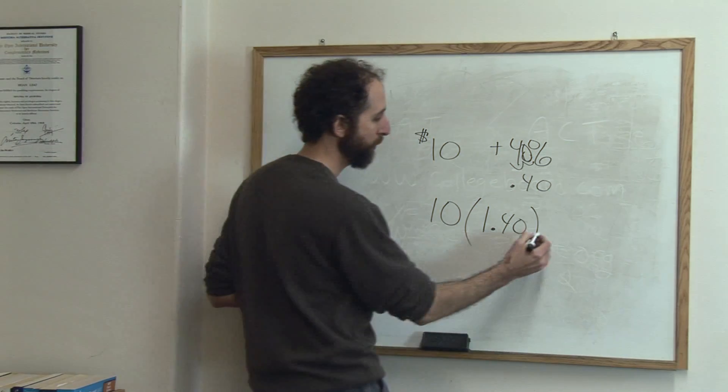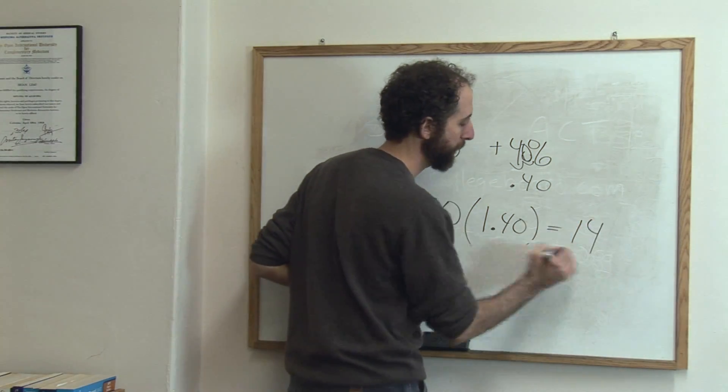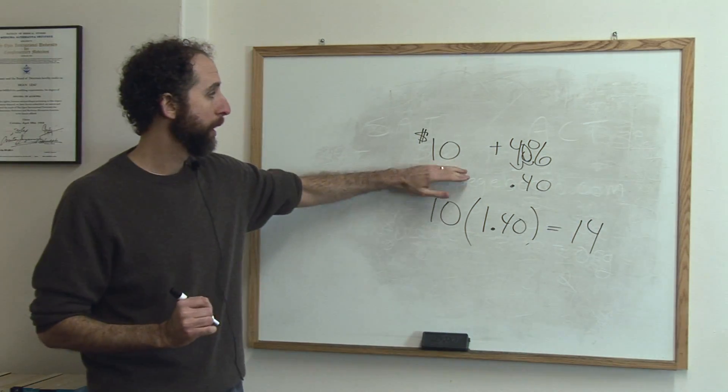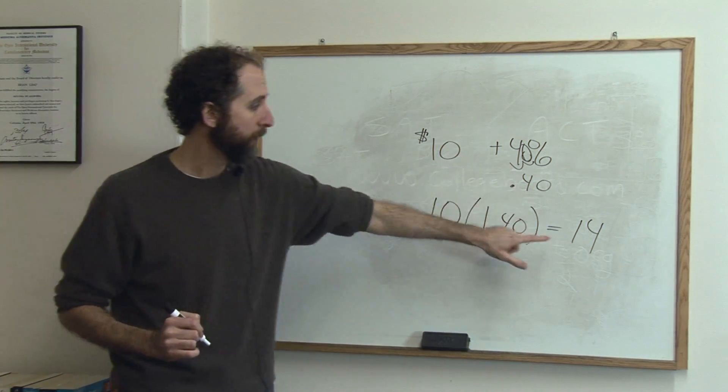So 10 times 1.4 is 14. So a $10 shirt marked up 40% is $14.